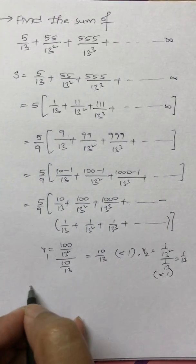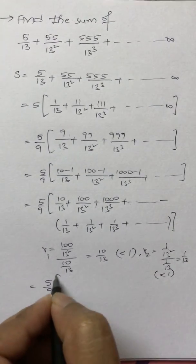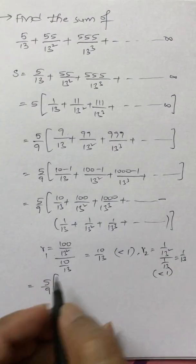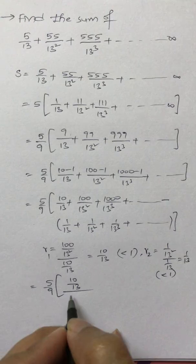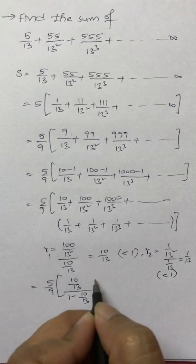So both R1 and R2 are less than 1, so directly we can apply A/(1-R) because this is infinite GP. So 10/13 divided by 1 minus 10/13.